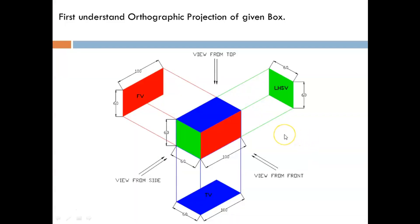Before drawing the box, first understand the orthographic projection concept. Here they have given a box with length 100, width 60, and height equal to 60. We already know how to take a front view, top view, and side view.